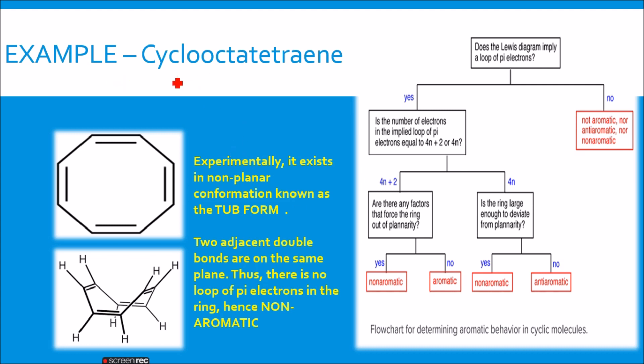Let's go with the other example. I go with cyclooctatetraene. Let me proceed with the same thing now. Does the Lewis diagram imply a loop of pi electrons? Yes. You see, it has a loop of pi electrons. It involves in resonance and it has a loop of pi electrons. The answer is yes.